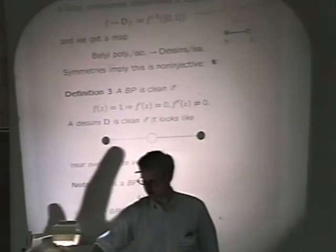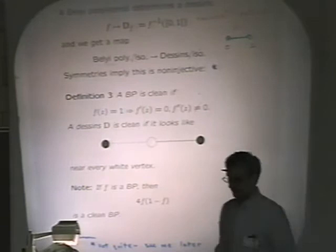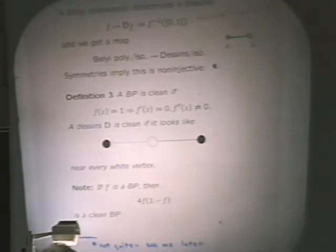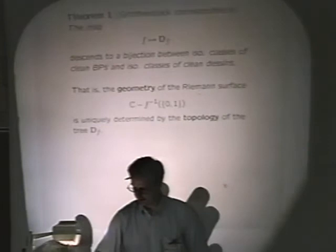A Belyi polynomial is simply a polynomial with algebraic coefficients with the following property: there are only two critical values, and those critical values, the set of finite critical values is the set 0 and 1. And we say two of these things are isomorphic if they differ by an affine coordinate change in the domain.